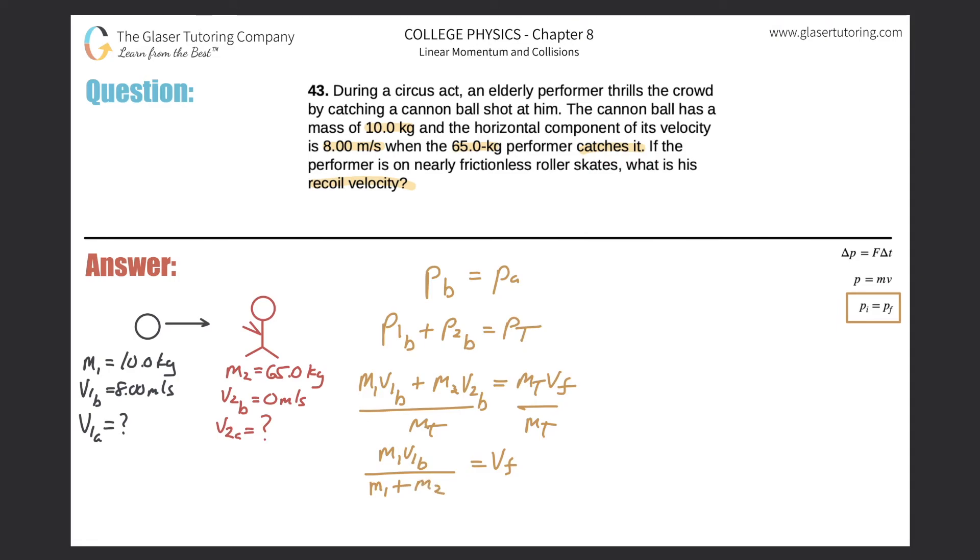So this is our equation, all we got to do is plug in and then we can solve. So m1 was 10. I'm just using the picture now. m1 is 10, v1 is going to be 8. We get m1, which was 10, plus the mass of the performer, which was 65, and that will equal vf.